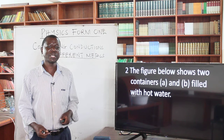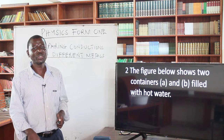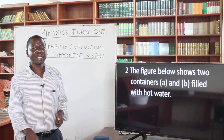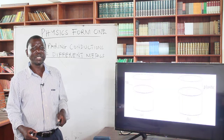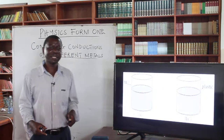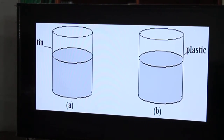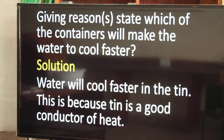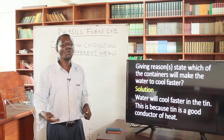Another question we may get is this: the figure below shows two containers — container A and container B. Both containers are filled with hot water. One container is made of tin and the other is made of plastic. They are identical; the only difference is the material. Giving reasons, state which of the two containers will make the water cool faster.